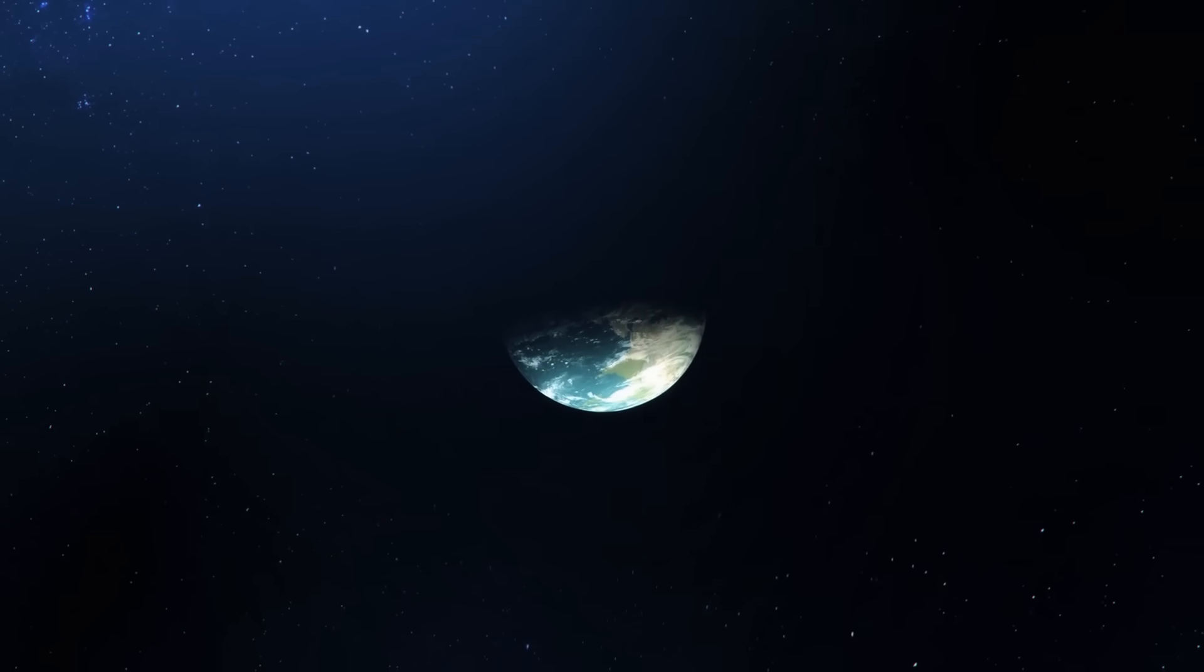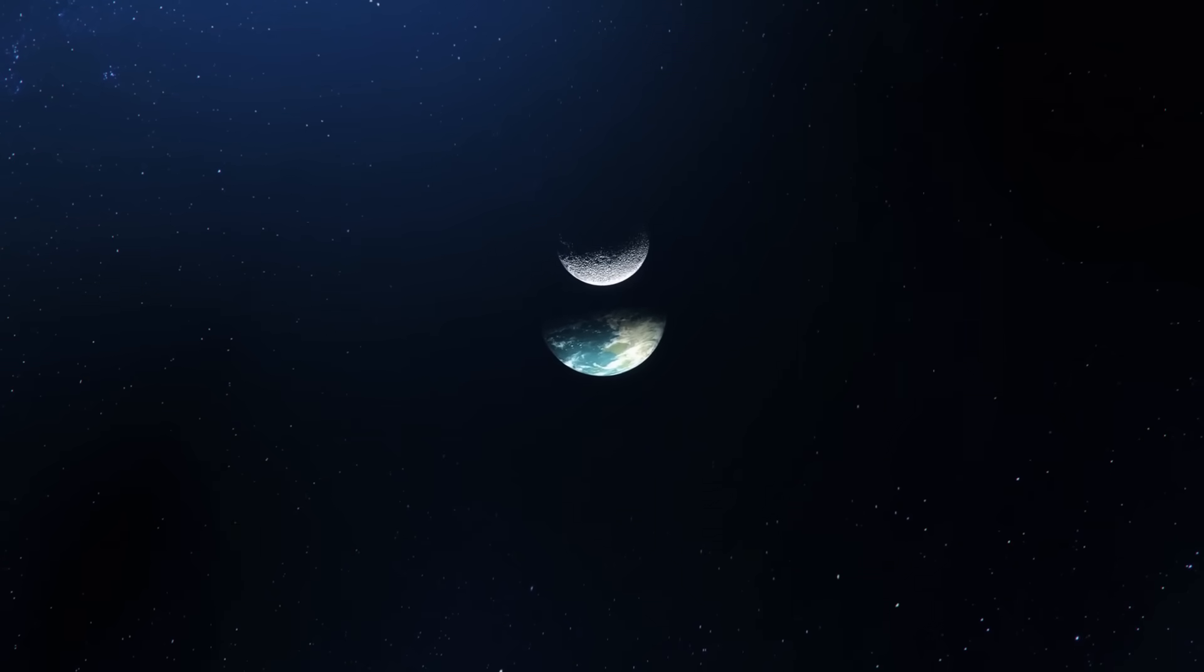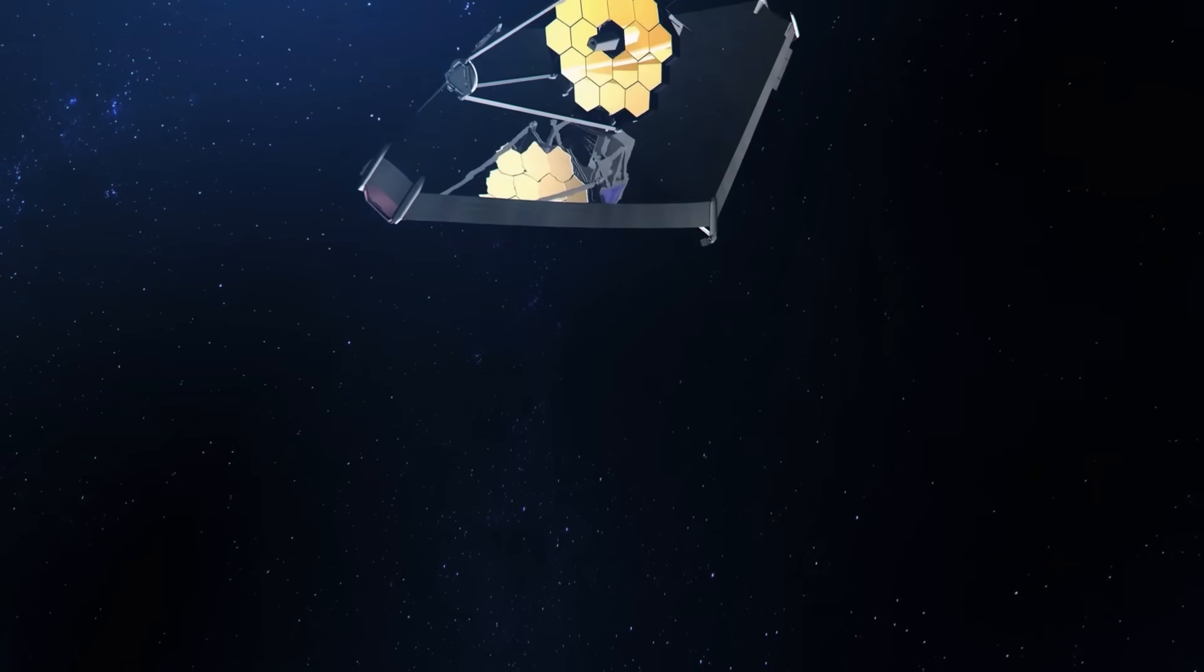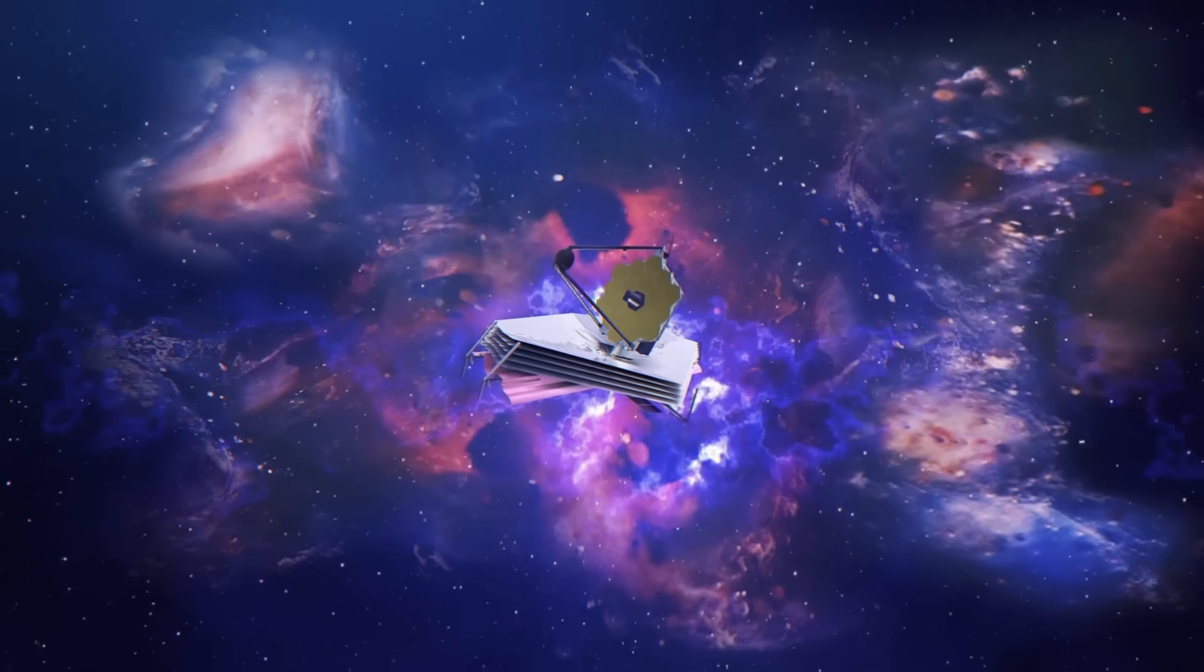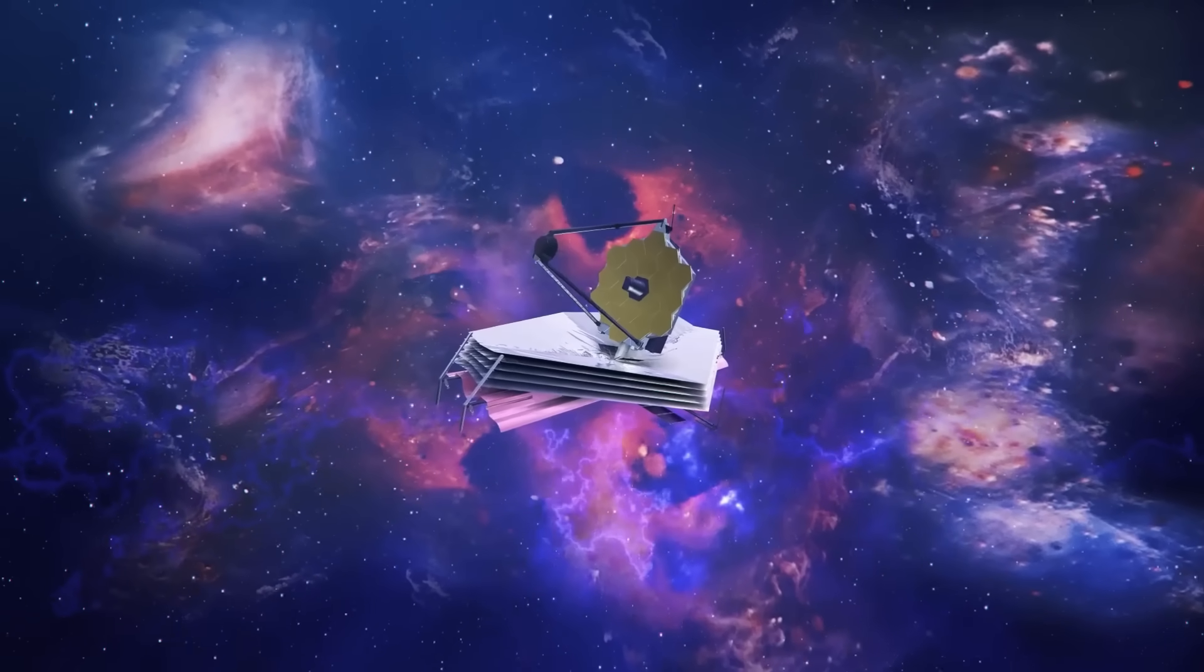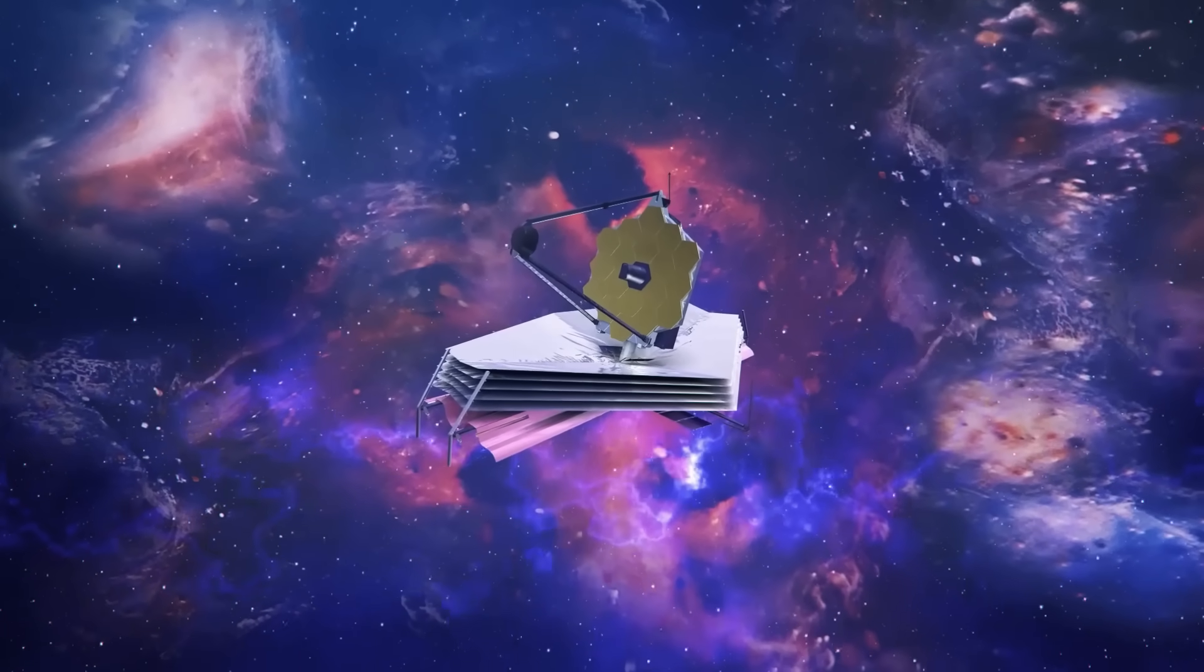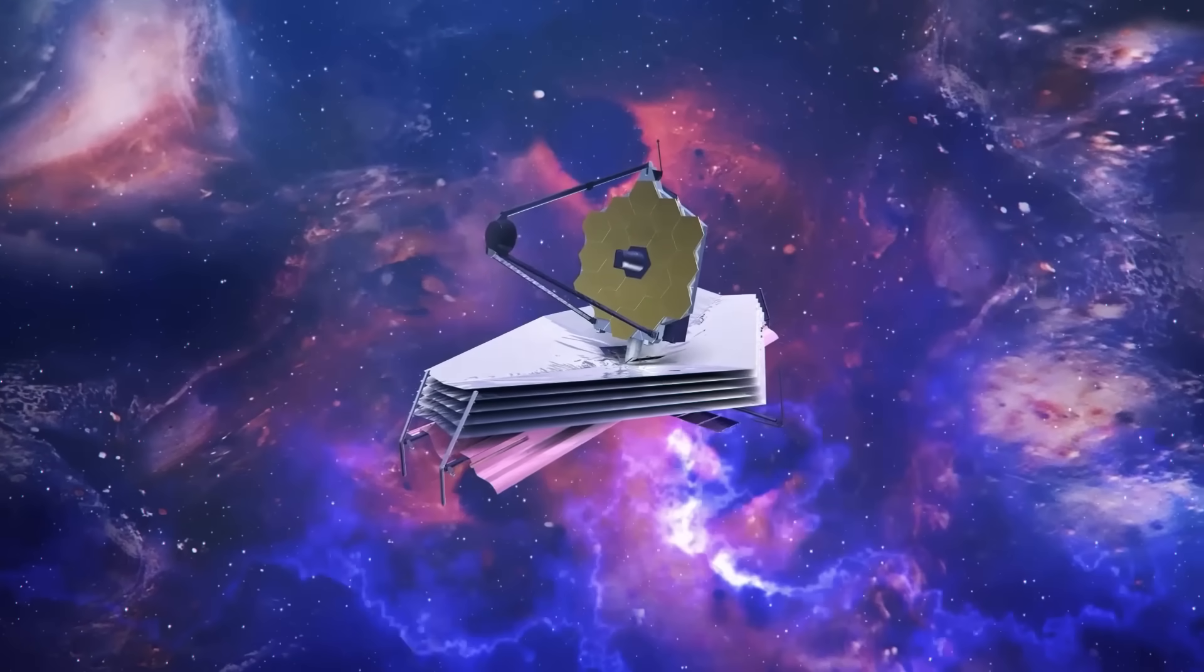The James Webb Telescope will move out 940,000 miles away from the Earth, well beyond the orbit of the Moon, where it will set up shop and orbit the Sun. It will be the largest observatory ever sent into orbit and will use special cutting-edge optical science and engineering to peer into the unknown.